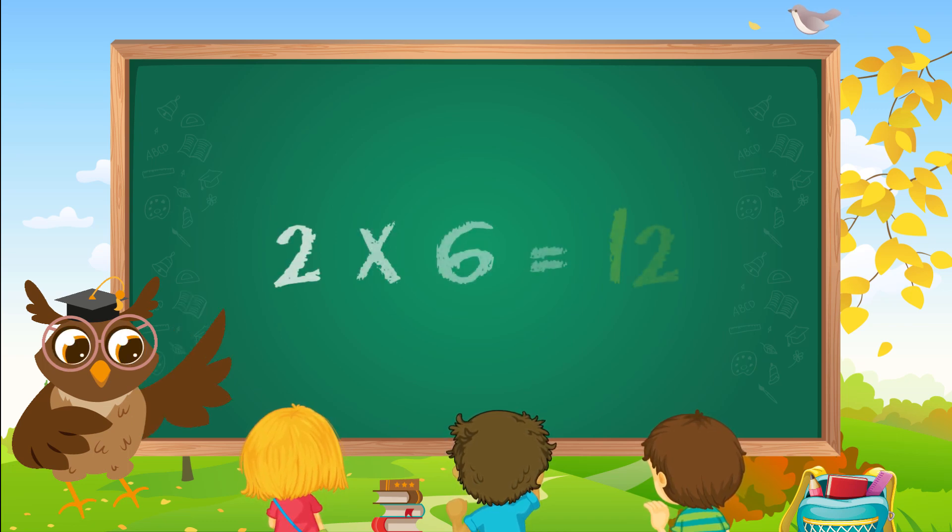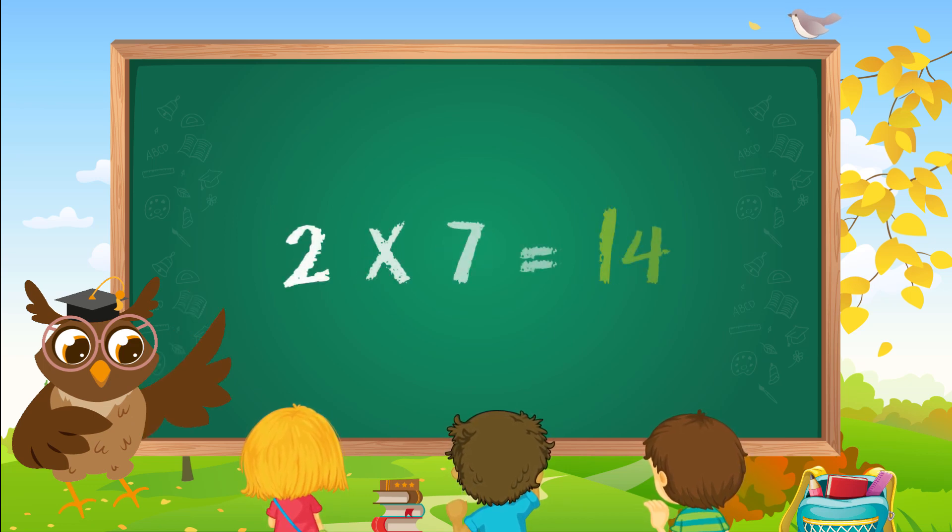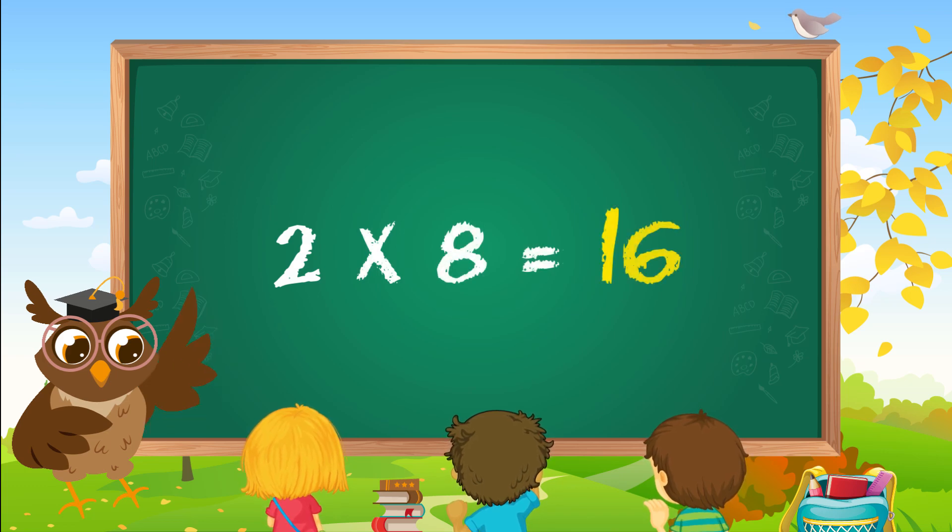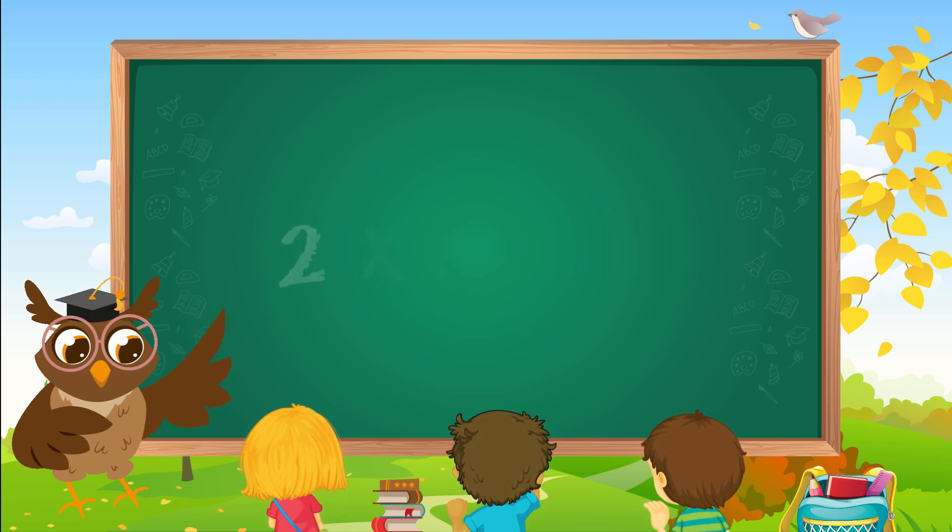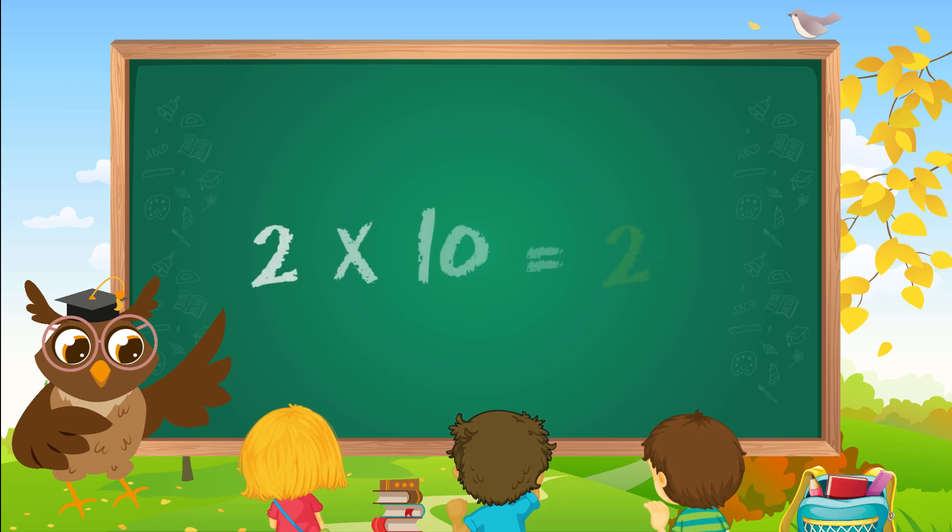Two six are twelve. Two sevens are fourteen. Two eights are sixteen. Two nines are eighteen. Two tens are twenty.